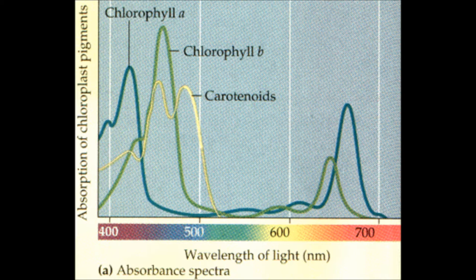Carotenoids are pigments that are used in photosynthesis that absorb red, yellow, and orange light wavelengths. Carotenoids and chlorophyll B transfer their light energy to chlorophyll A.